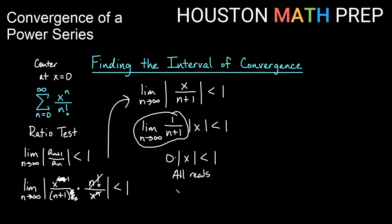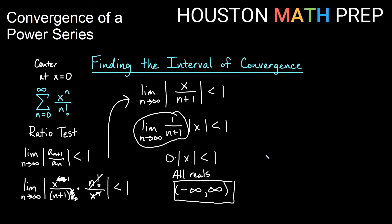Our interval of convergence is from negative infinity to infinity. The radius of convergence: our center is 0, and we converge for all real numbers, so we can go out as far as we want from the center and still converge. The radius of convergence is also infinite.